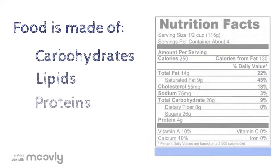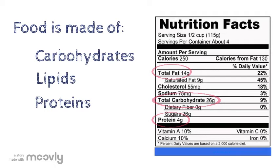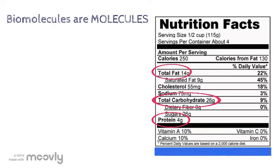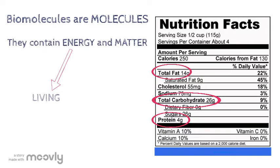The food that we eat is primarily made of the other three biomolecules: carbohydrates, lipids, and proteins. Some foods have all of these biomolecules, and other foods only have one or two types of biomolecules. Food is important because it provides energy for living and atoms or molecules for growing.